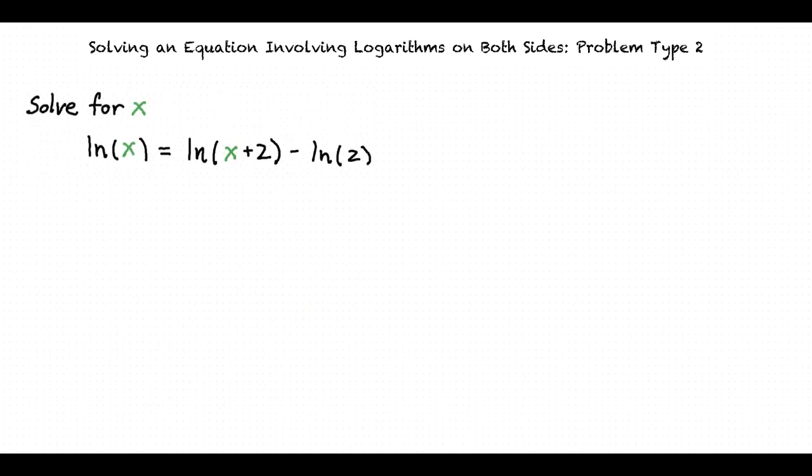This problem is asking us to solve for x in the logarithmic equation natural logarithm of x equal to the natural logarithm of x plus 2 minus the natural logarithm of 2. What should we do first?